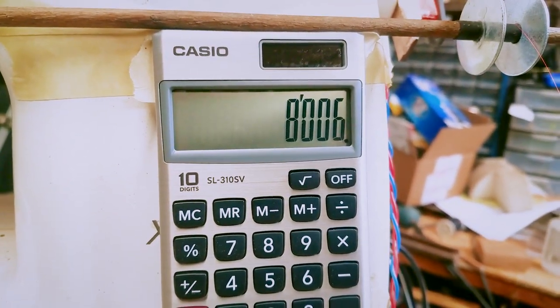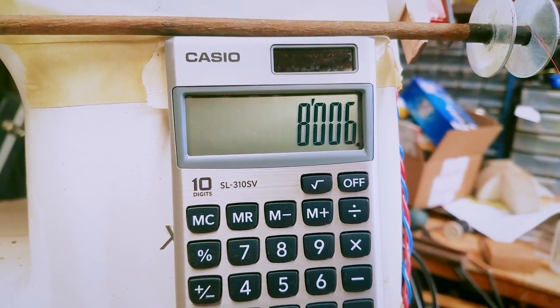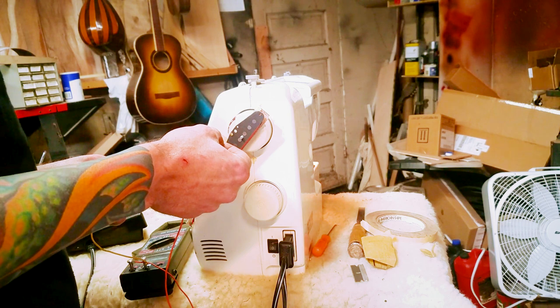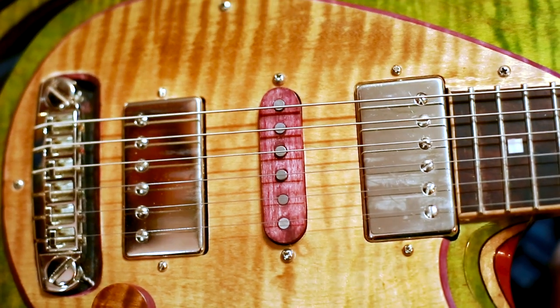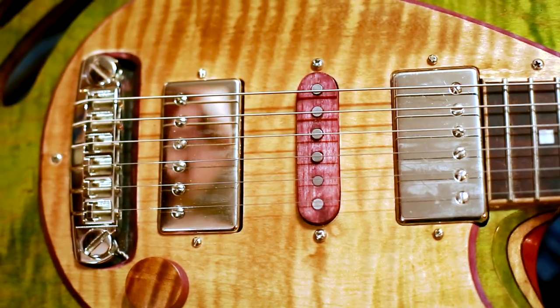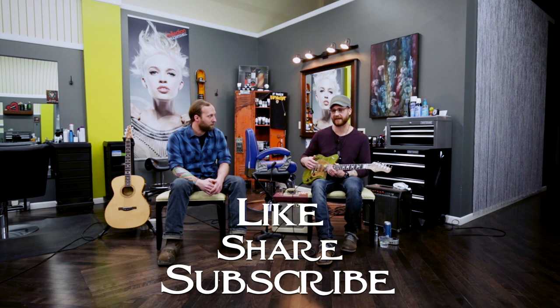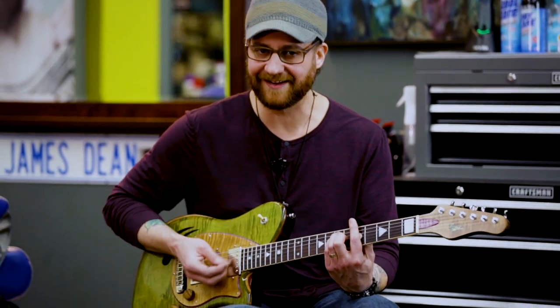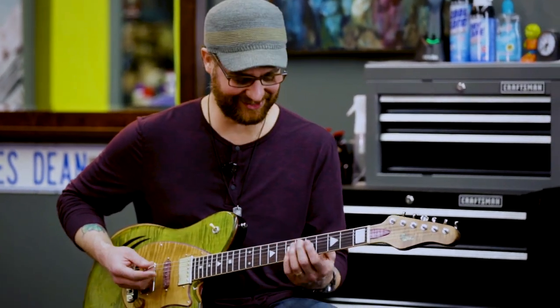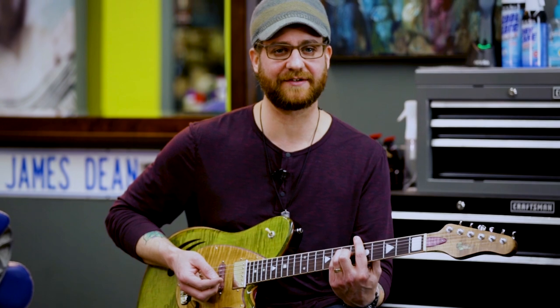All right, now we're at 8,000 turns. Let's check the DC resistance. We are at 6.2 kilo ohms, just where I wanted it. Now all that's left is to give you a sample of what this pickup sounds like. Here's a short excerpt from an interview I did with Klein about his Nautilus guitar video. Please like, share, and subscribe as I'm putting out more videos just like this in the near future. Thanks for watching.